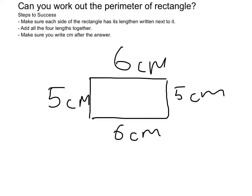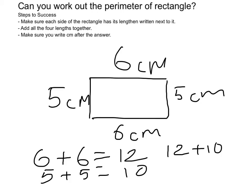Now I need to do the second step, which is to add all the sides together. So six plus six equals twelve, and five plus five equals ten. Then I add those together: twelve plus ten equals twenty-two.